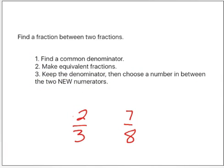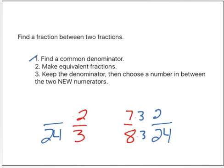Now I want you to find a fraction between two-thirds and seven-eighths. I'm going to do a common denominator of twenty-four. Eight times three is twenty-four. Seven times three is twenty-one. On the other side, three times eight is twenty-four. Eight times two is sixteen. I made equivalent fractions.